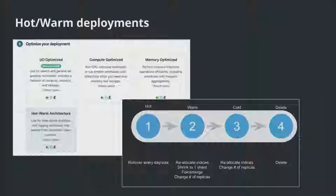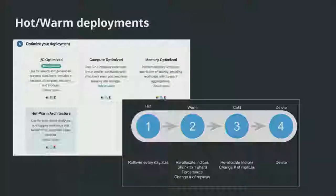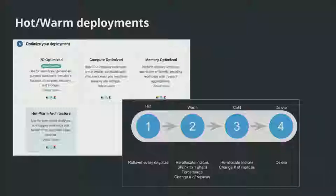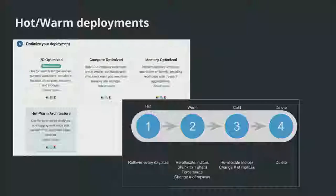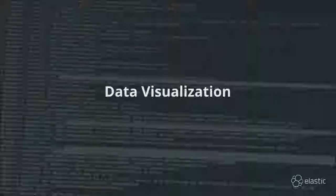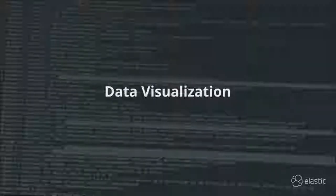A couple of other things on the storage side: hot/warm architectures are pretty important for logs and metrics. We support them in Elastic Cloud — if you start a deployment, there's a hot/warm template that selects sensible defaults for how you organize your hosted Elasticsearch instances. Within the stack itself, there's a tool called Curator, and we're also adding an index lifecycle management feature as a turnkey option coming in the next couple of releases.